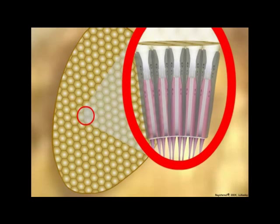In photopic eyes, each ommatidium serves as an individual visual unit for viewing only that portion of the visual scene that is directly in line with the ommatidium's position. The ommatidia of nocturnal insects are referred to as scotopic ommatidia.